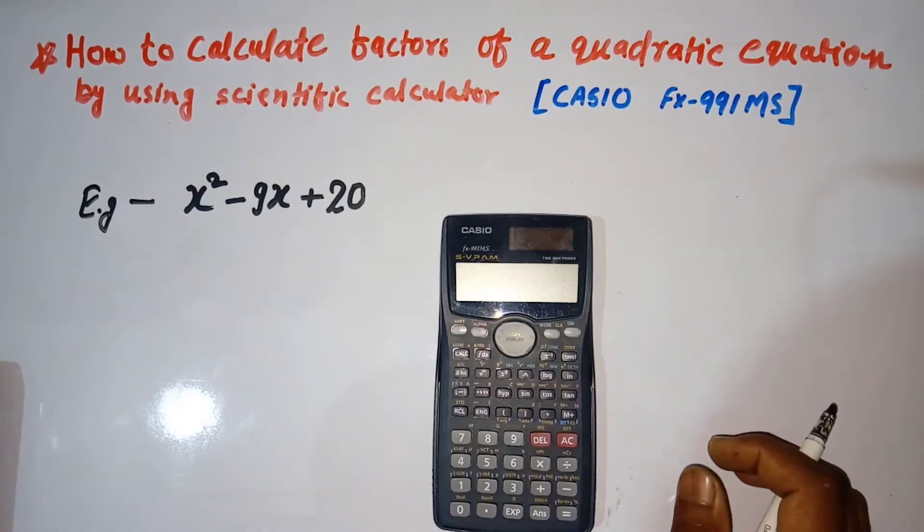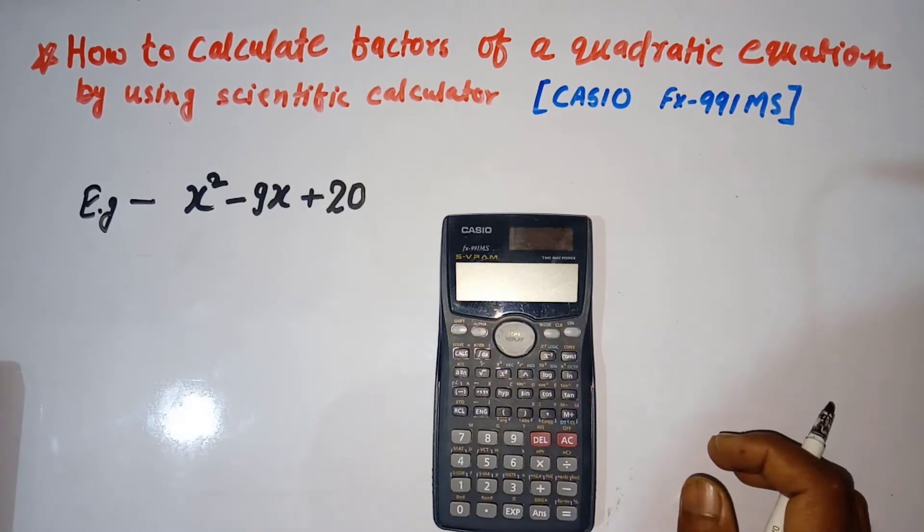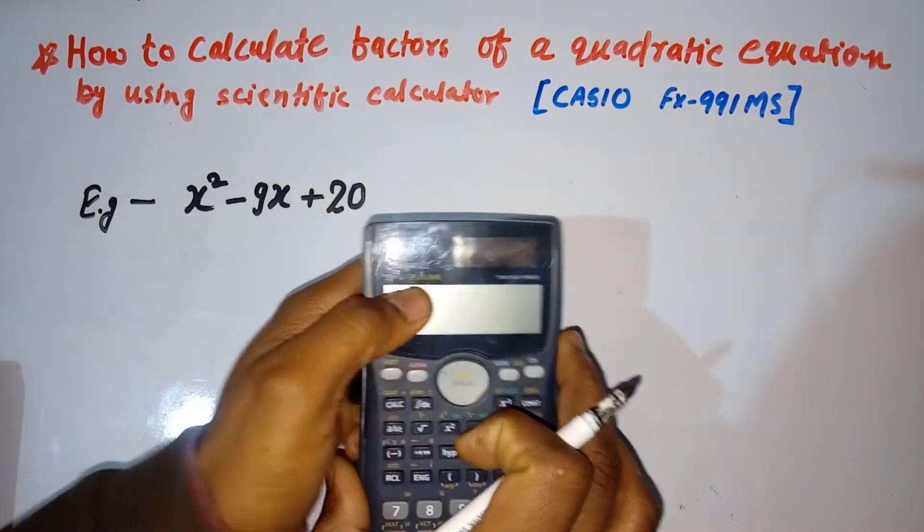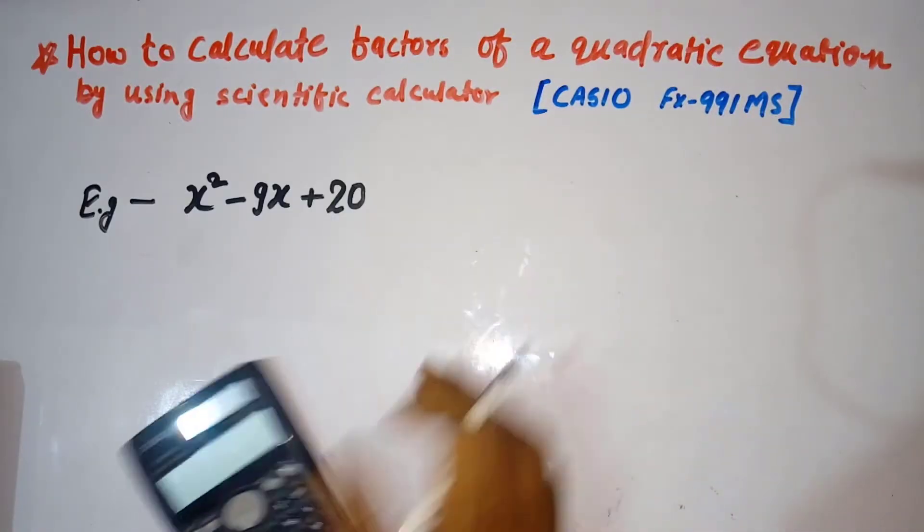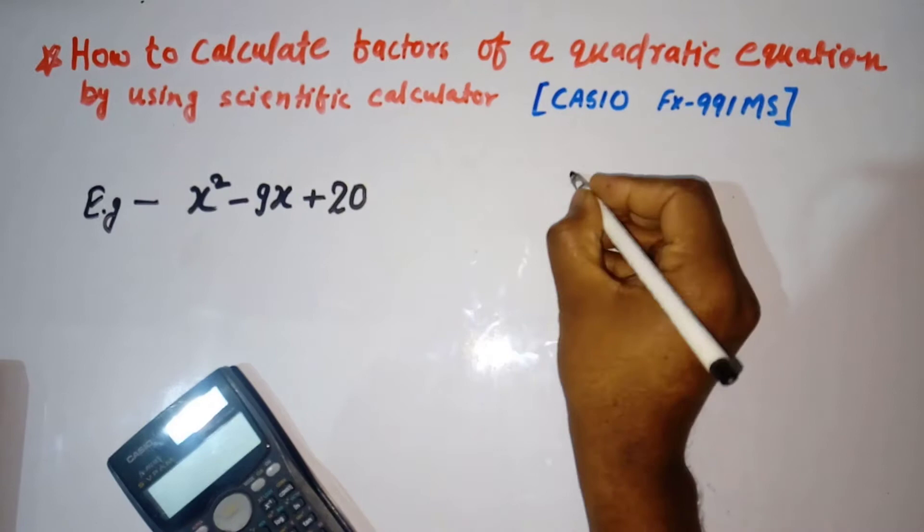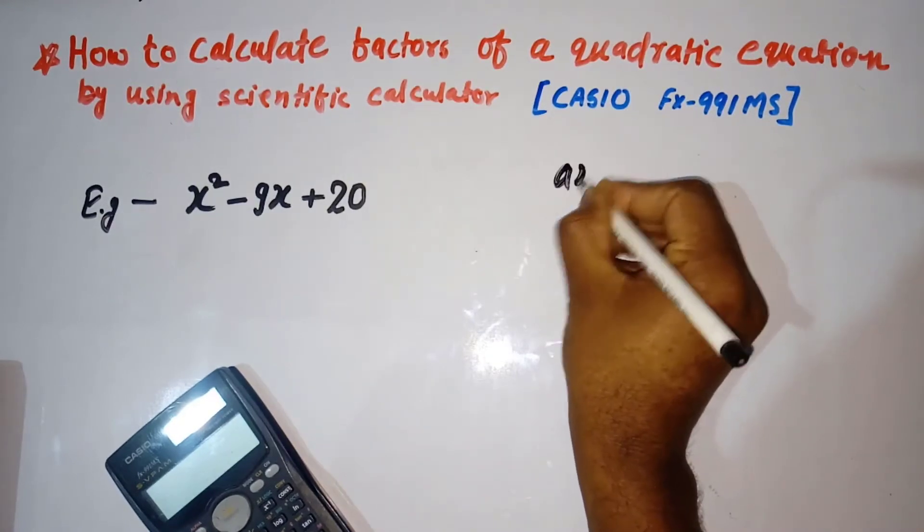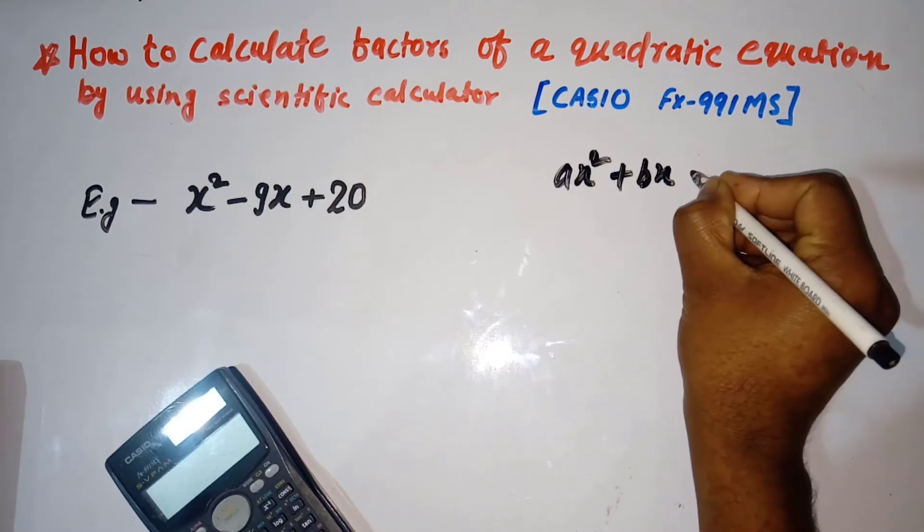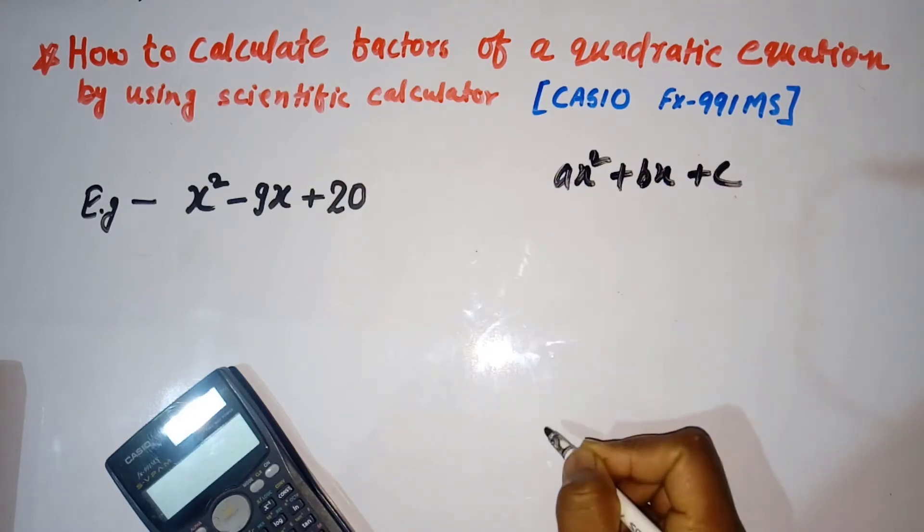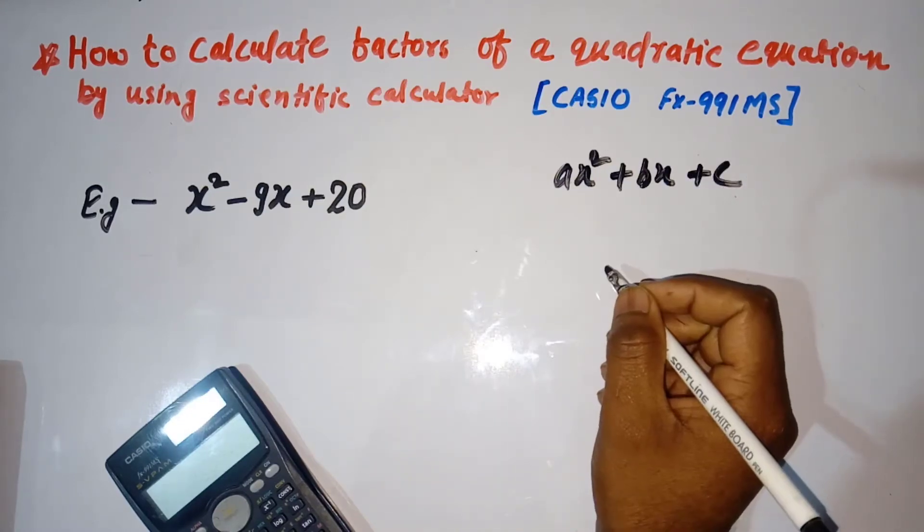Let's see how to calculate factors of any quadratic equation using a scientific calculator, the fx-991ms. The quadratic equation is always in the form ax² + bx + c. Let's take an example.